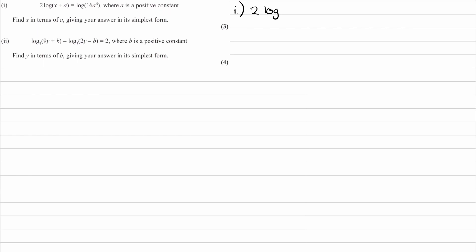Okay, so let's just write this out. So 2log(x+a) is equal to log of 16a to the power of 6. We can't get rid of the log straight away because of the two that we have here. So we have to figure out a way that we can manipulate the left-hand side so we can get rid of the logs.